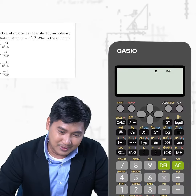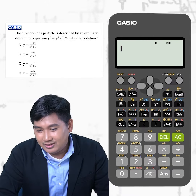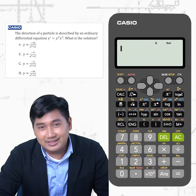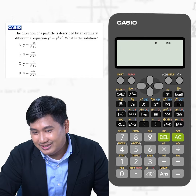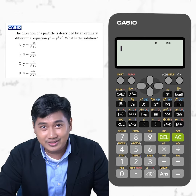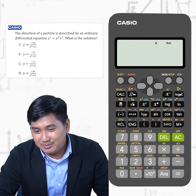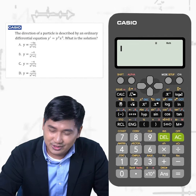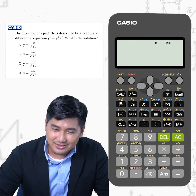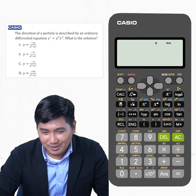Let's read the sample problem. The direction of a particle is described by an ordinary differential equation: y prime is equal to y squared times x cubed. What is the solution of this problem?